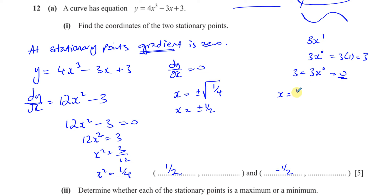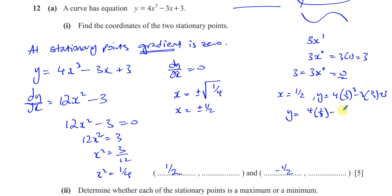Now we find y for each x value. When x equals positive a half, y equals 4 times a half cubed, minus 3 times a half, plus 3. A half cubed is 1 over 8, so it's 4 over 8 minus 3 over 2 plus 3, which is a half minus 3 over 2 plus 3. That gives minus 2 over 2, which is minus 1, and minus 1 plus 3 is 2. So when x equals a half, y equals 2.